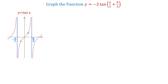In this video we will graph the trigonometric function y equals negative 2 tangent of x over 3 plus pi over 3. Recall that in the basic tangent function y equals tangent of x, the two closest asymptotes to the origin are negative pi over 2 and positive pi over 2. This means that the function completes one period as x changes between negative pi over 2 and positive pi over 2.